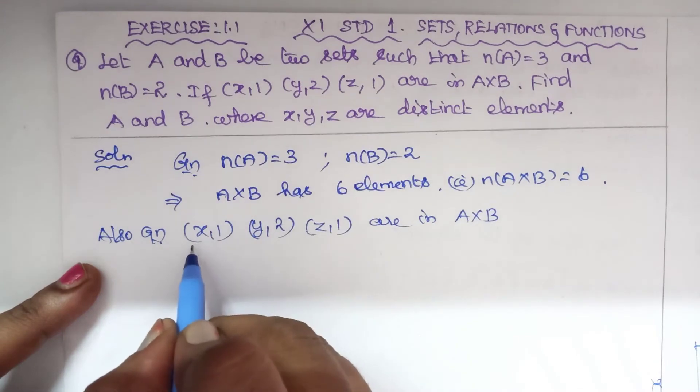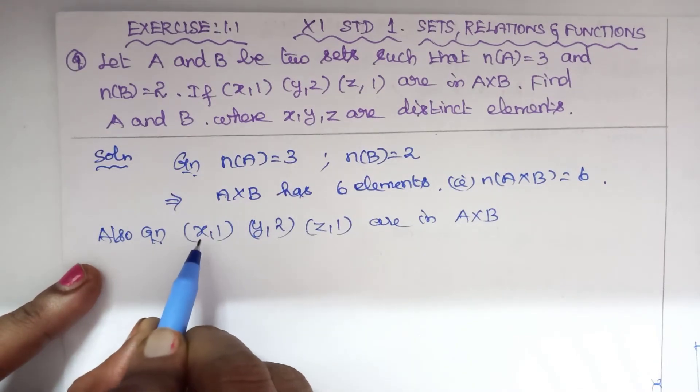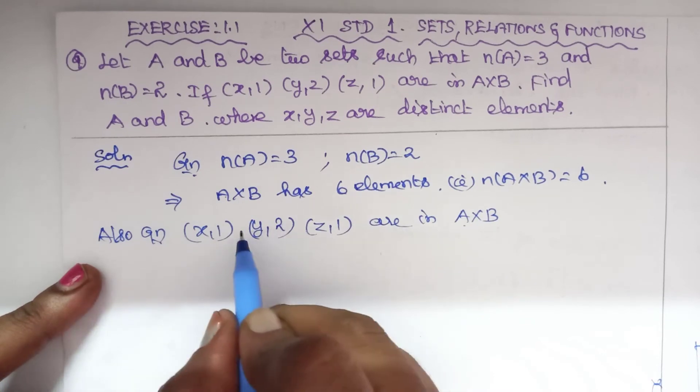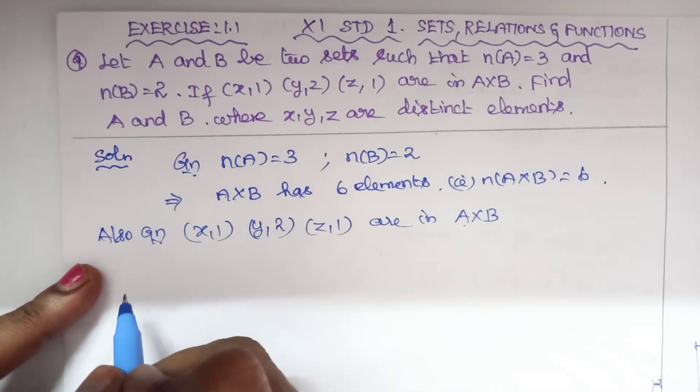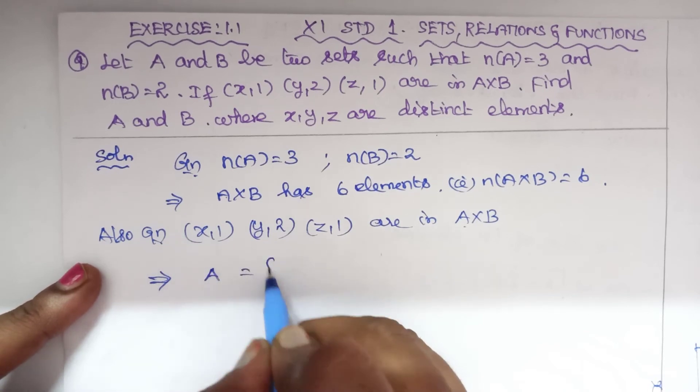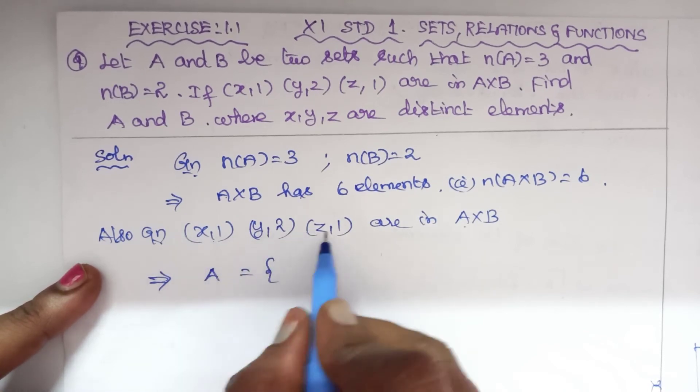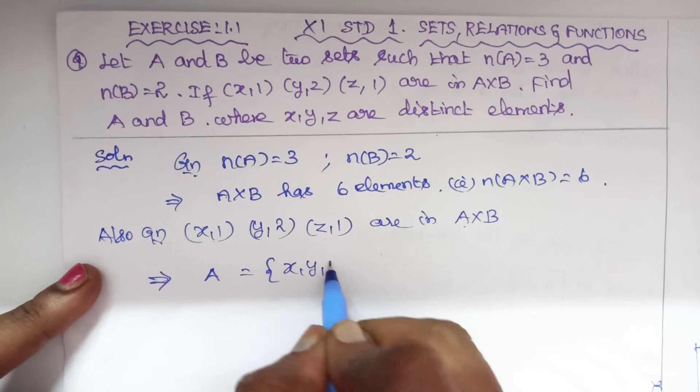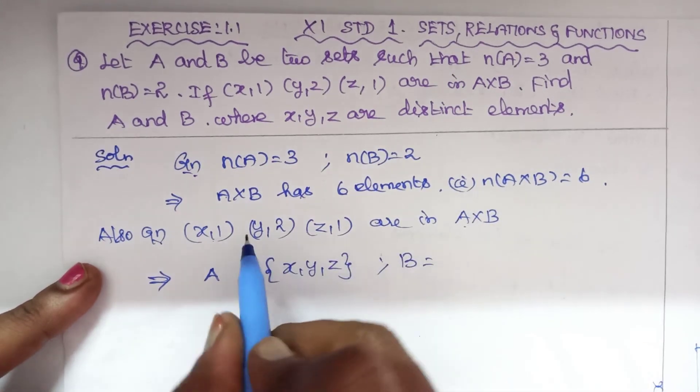Ordered pairs - the first elements which implies x, y, z - and this is the answer with n(A) equals 3.